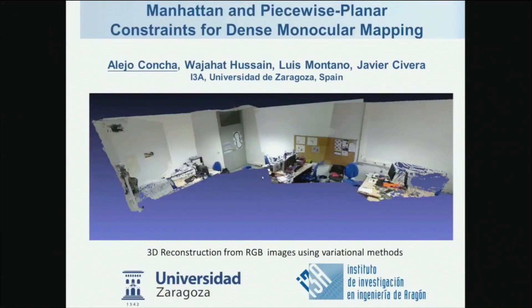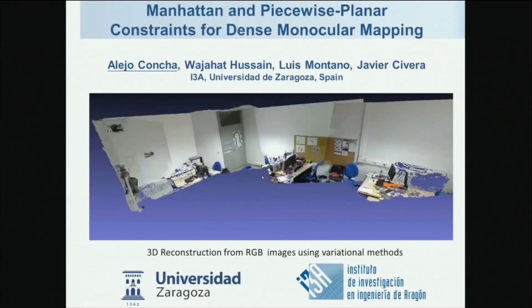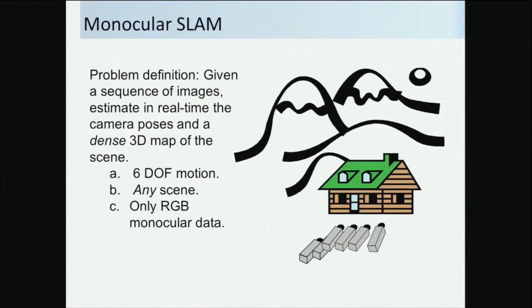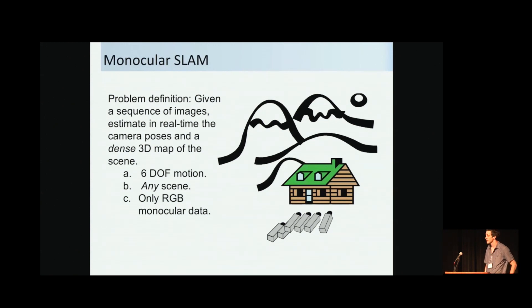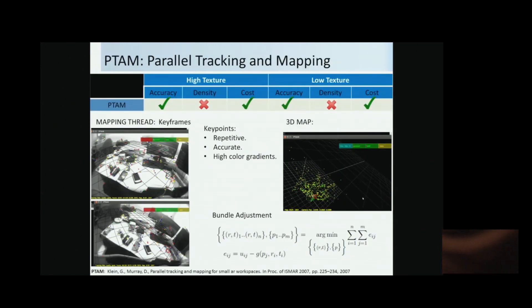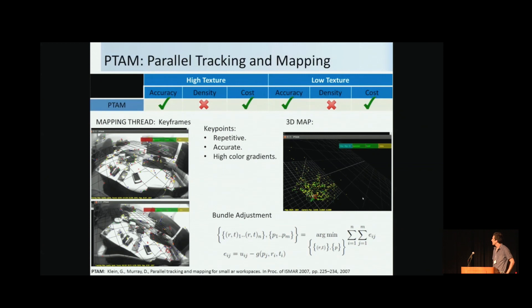Our work is about Manhattan and piecewise planar constraints for dense monocular mapping. Given a sequence of images, we want to estimate a 3D dense map of the environment. PTAM is a visual SLAM system that matches key points between keyframes, triangulates them, and minimizes the reprojection error using bundle adjustment — but its main limitation is that the result is not dense. A more recent work called DTAM densifies the reconstructions by minimizing a functional over the whole image composed of a photometric consistency term and a regularizer that smooths the surface.